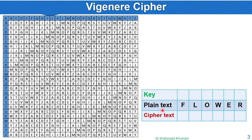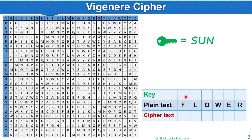Now let's take an example. We have a plain text which is 'flower.' For this we need a key — for example, I will use the key 'sun.' Now I will write it in this table.